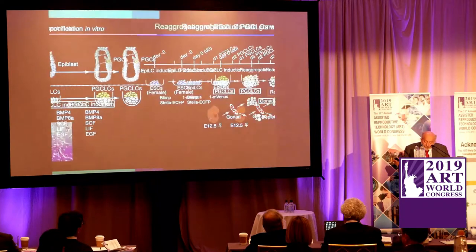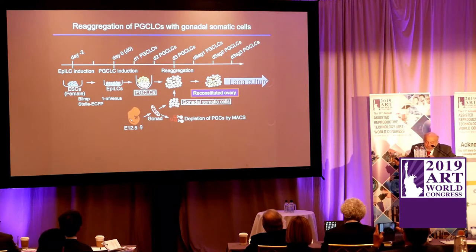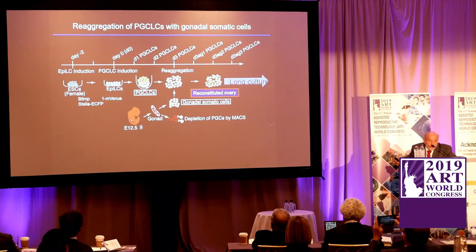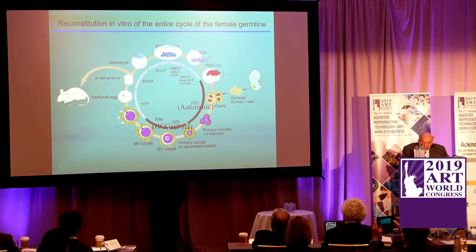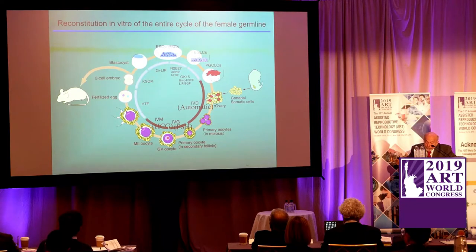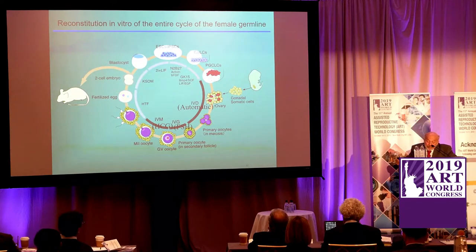We want to take these oocytes as soon as we have them and freeze them like normal, making primordial follicles, rather than the long culture needed to mature them — that is problematic. The complete cycle: gonadal somatic cells go into PGCs, which make primary oocytes almost automatically; you go around to M2 oocytes, fertilize them, get embryos, and from embryos you can get stem cells again to continue the circle. Germ cells are what makes the species and all of us immortal.